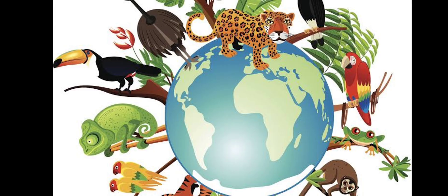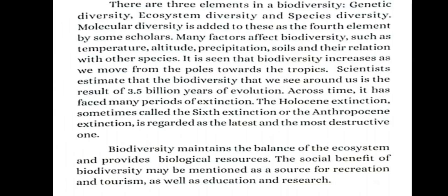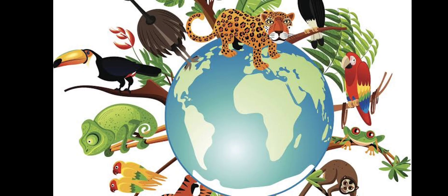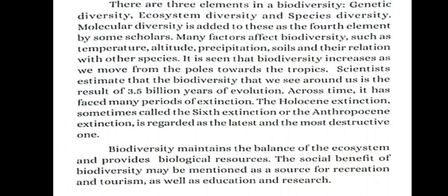In 1985, Walter G. Rosen coined the term biodiversity, which is a short form of biological diversity. There are three main elements of biodiversity: genetic diversity, ecosystem diversity, and species diversity.